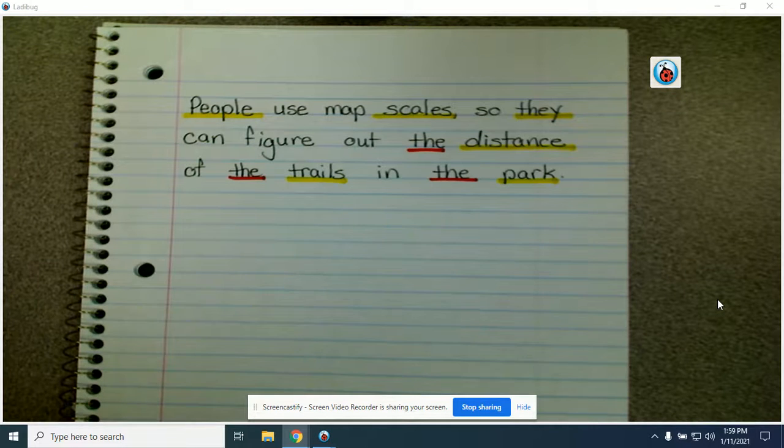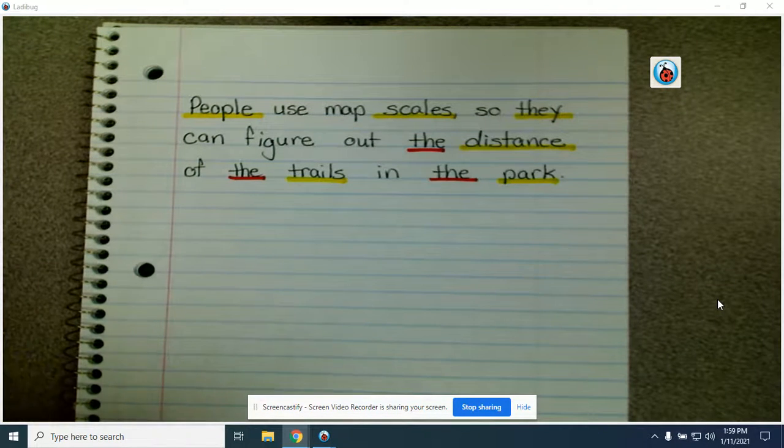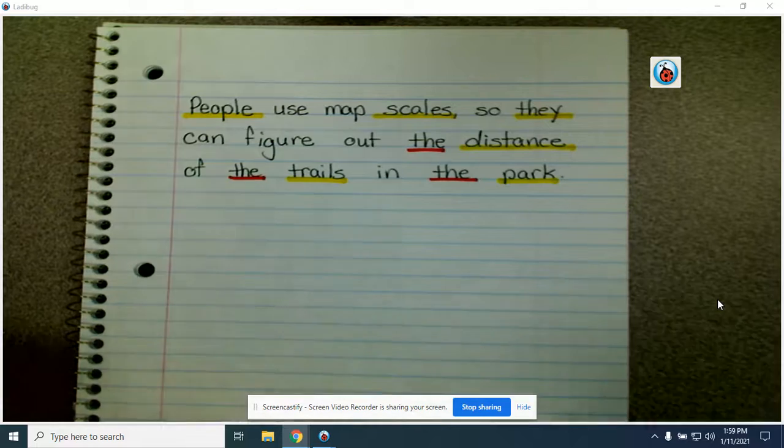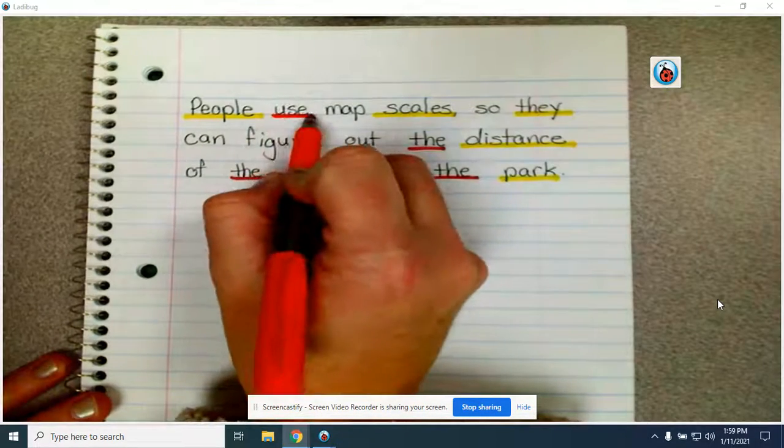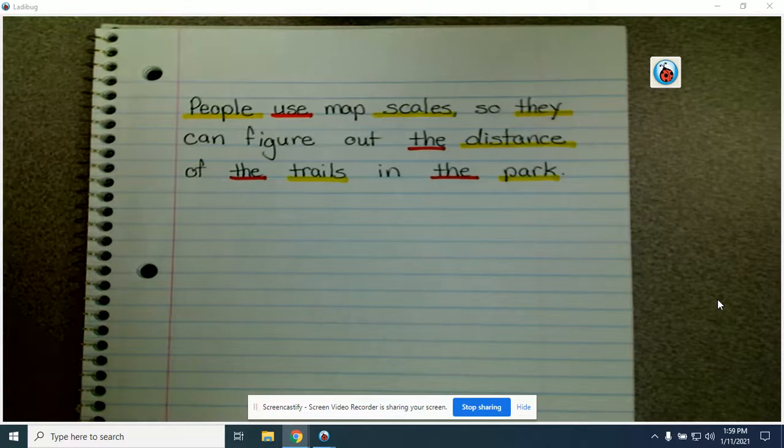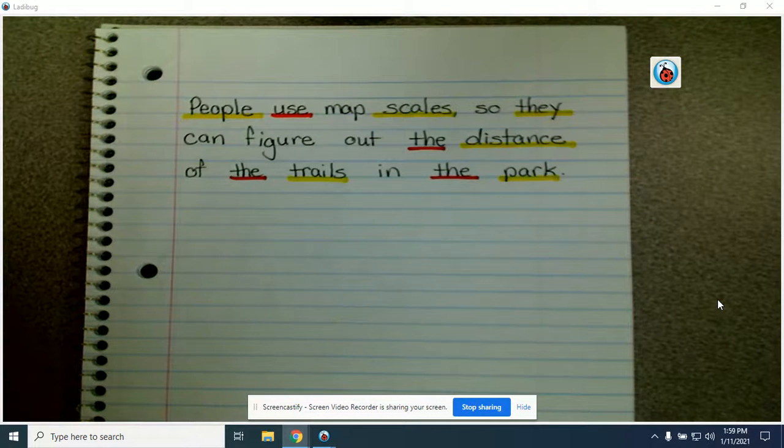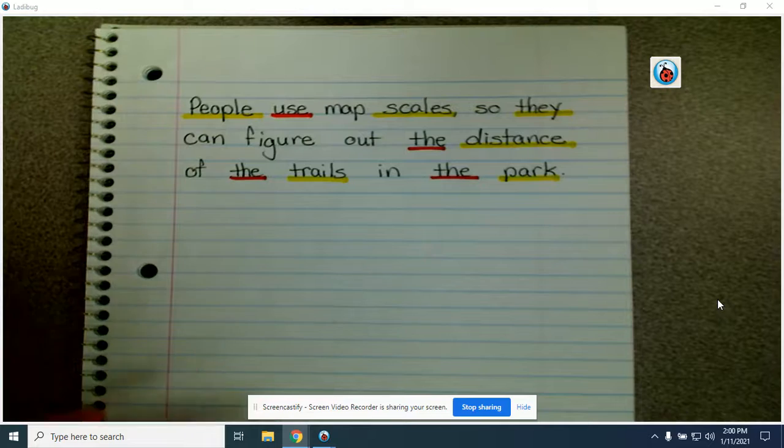Now, we want to underline the verb. Remember, the verb is the doing part. People do what? People use. We have another verb in the sentence.